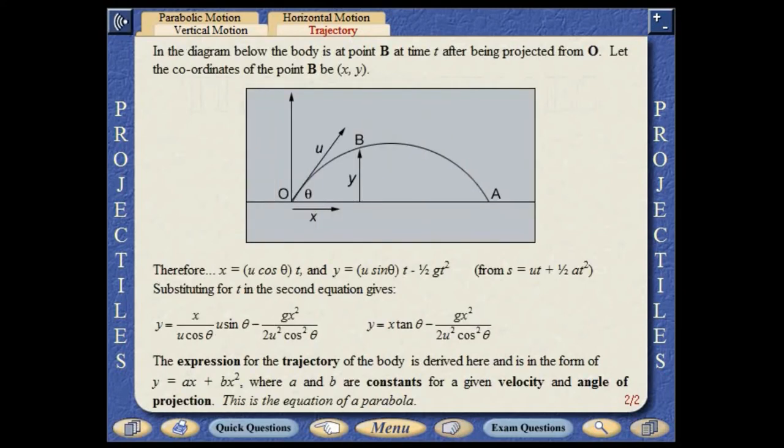In the diagram below, the body is at point B at time t after being projected from the origin. The expression for the trajectory of the body is derived here and is in the form y equals ax plus bx squared where a and b are constants for a given velocity and angle of projection. This is the general equation of a parabola.